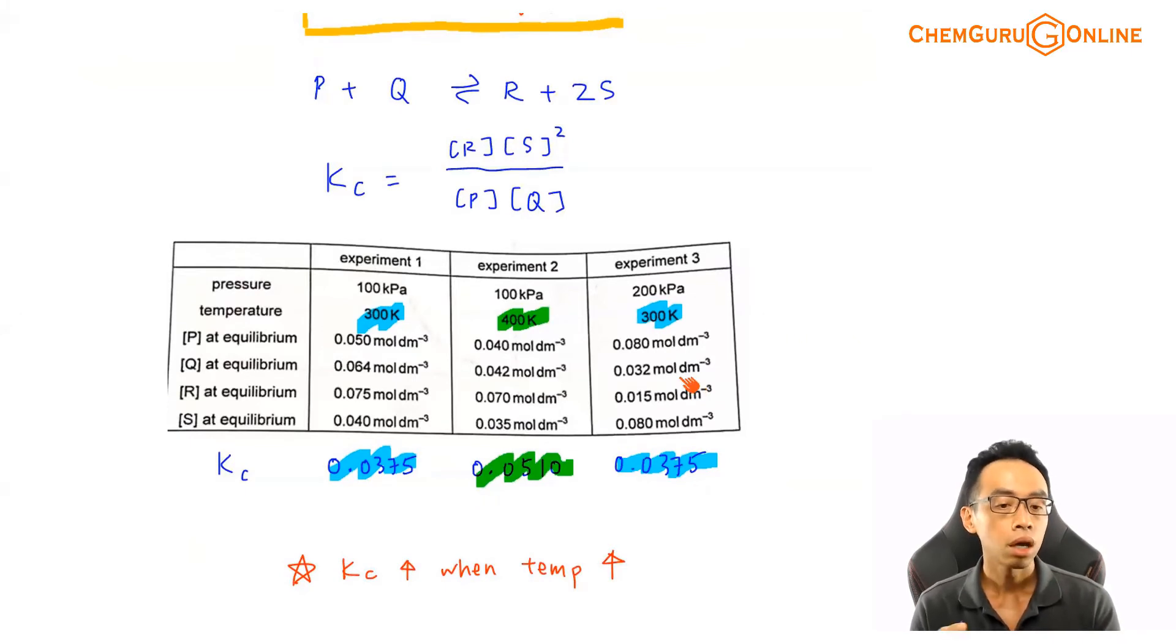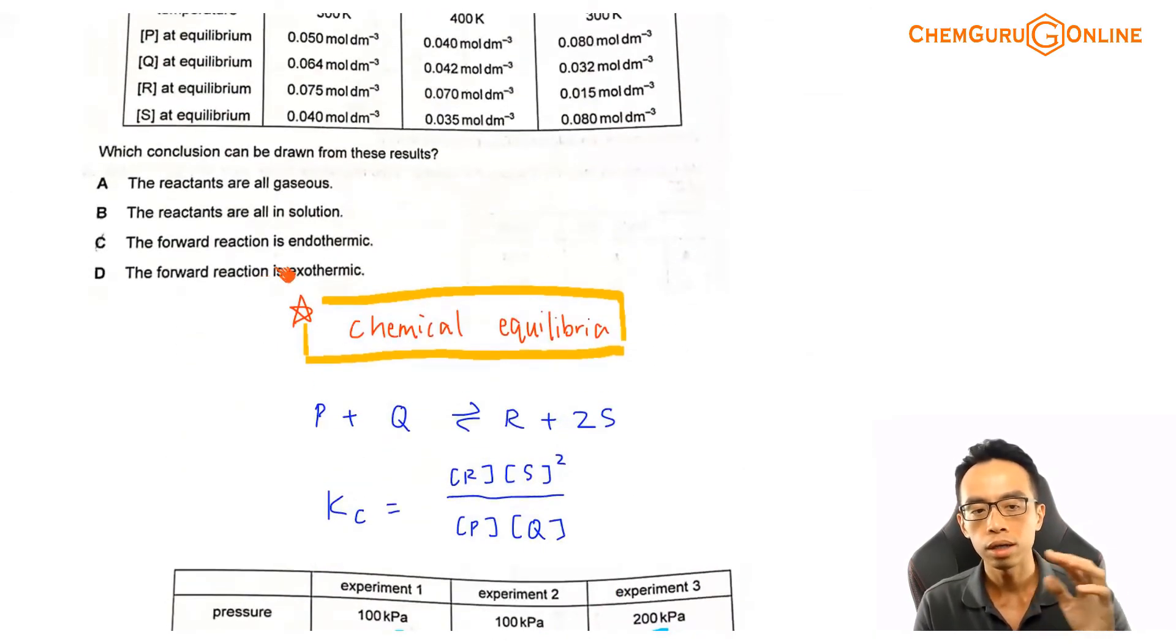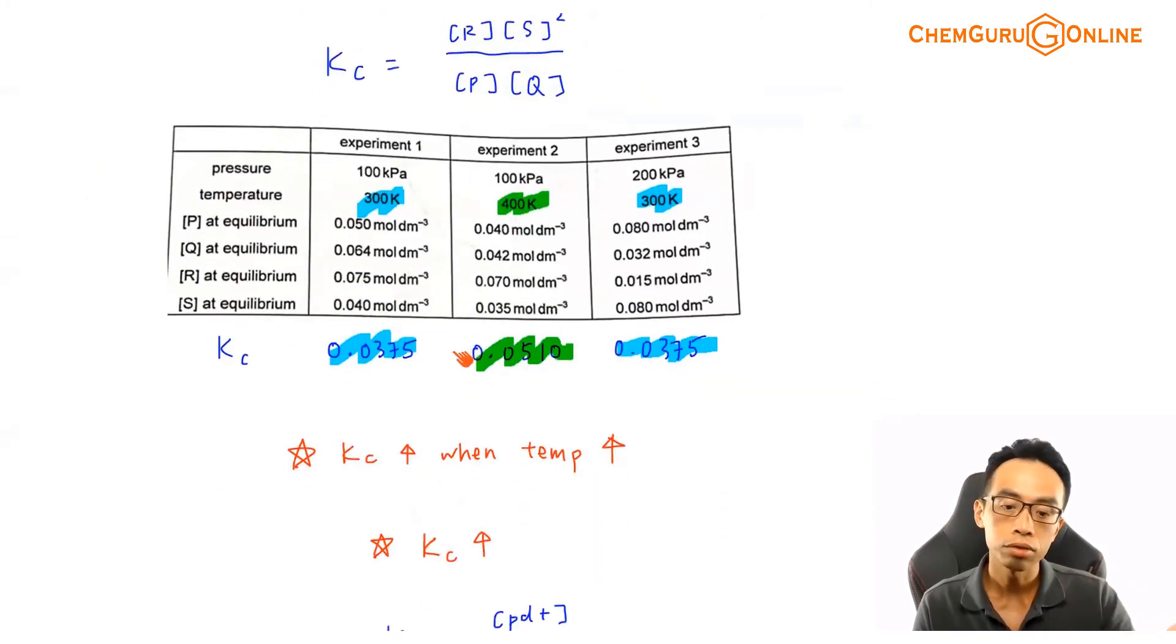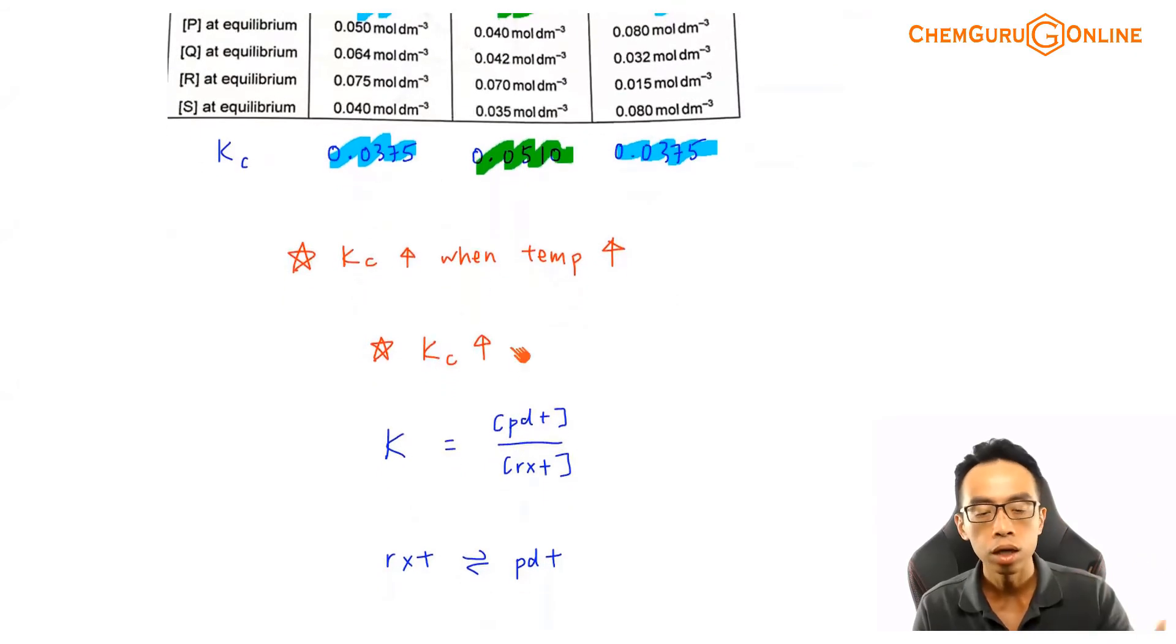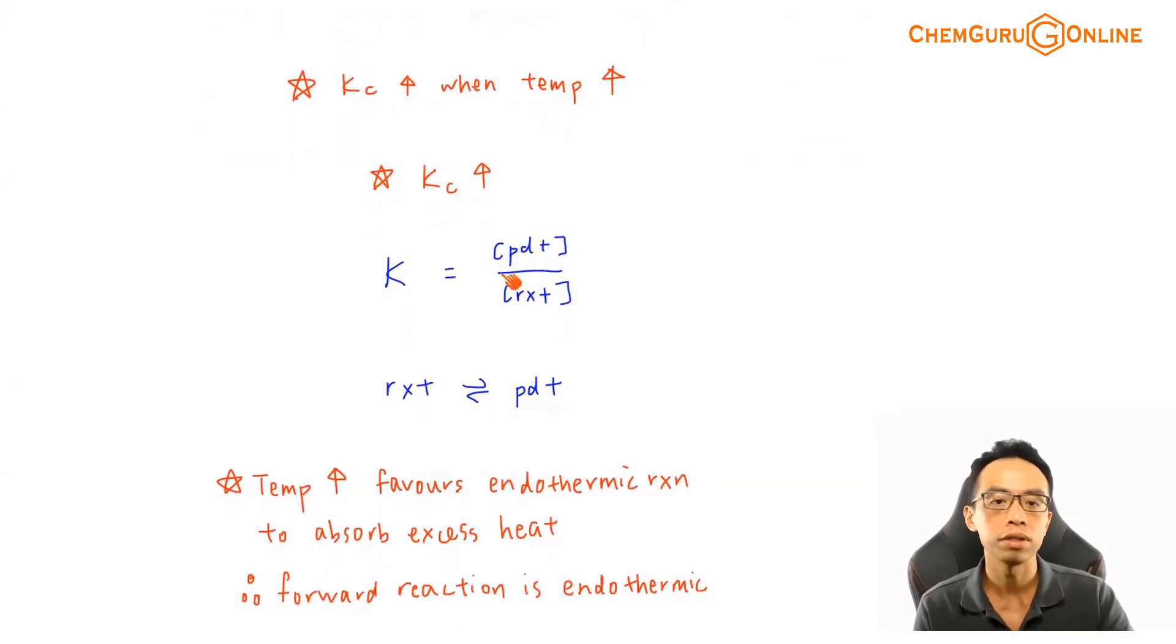Now what we can do is we can make use of this. The temperature increase, KC increase. We can use this to deduce the enthalpy change of the reaction. So if I come back to these options A, B, C, D, most likely we can deduce either option C is true or option D is true. Forward reaction is endo or forward reaction is exothermic. One of these must be the answer. So let us run through the concept to deduce the enthalpy change of the process, given that my KC is larger when there's an increase in temperature.